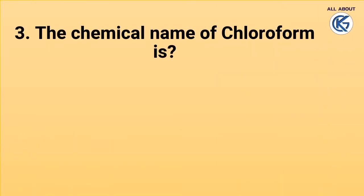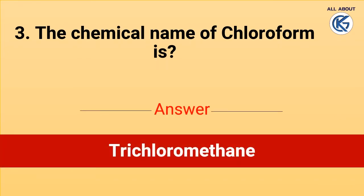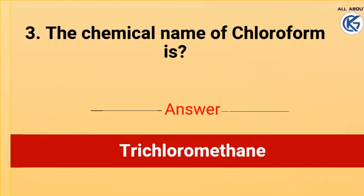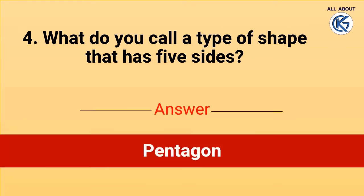The chemical name of chloroform is trichloromethane. What do you call a type of shape that has five sides? Pentagon.